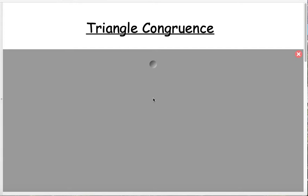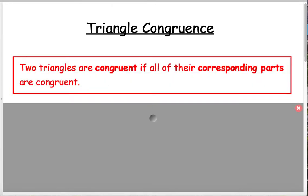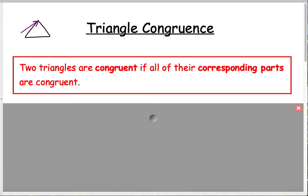Today we're going to talk about what it means for two triangles to be congruent. Two triangles are congruent if all of their corresponding parts are congruent. So the first question is, how many parts does a triangle have? If I draw a triangle, there are actually six parts: three sides, which are segments, and three angles — so there are six parts.